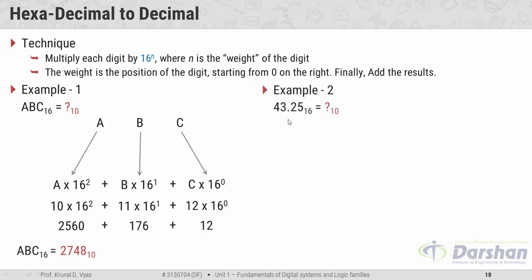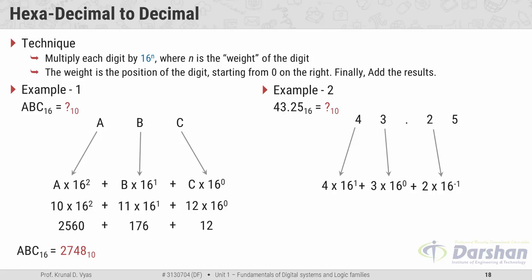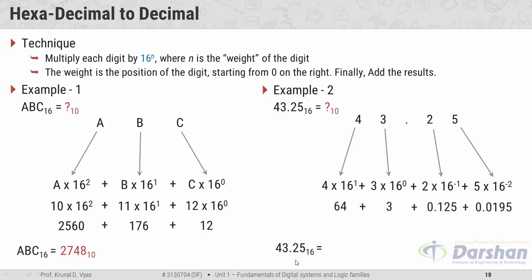The second example covers the fractional portion: 43.25 in hexadecimal. For the integer part: 3 into 16 raised to 0 and 4 into 16 raised to 1. For the fractional part: 2 into 16 raised to −1 and 5 into 16 raised to −2. Since there are only digits and no alphabets here, performing the calculations gives 43.25 in hexadecimal equals 67.1445 in decimal.